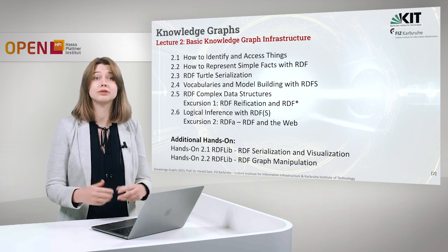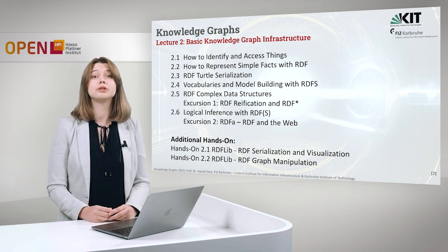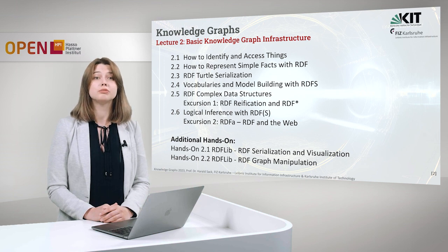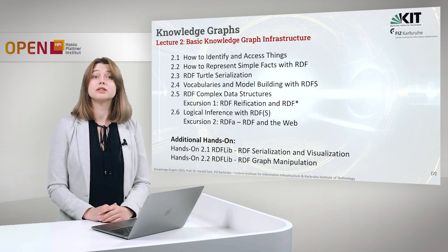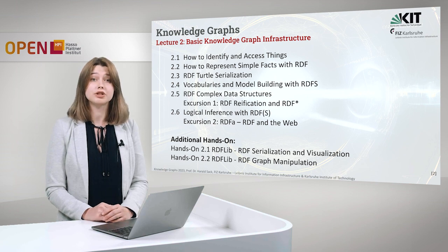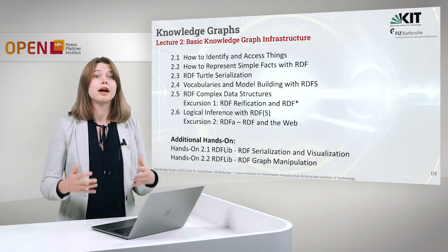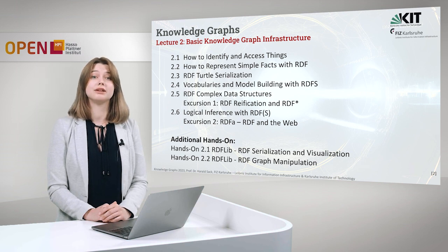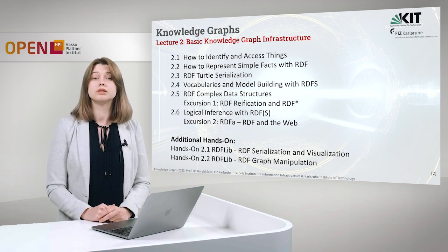Then we will move to the Turtle serialization, a way to encode RDF graphs. In 2.4 we will talk about vocabularies, semantics and meaning — we will talk about RDF Schema, which is used to describe facts and things. In 2.5 we will move to complex data structures: lists, containers, collections and how to work with them. In excursion 1 we will talk about RDF reification and RDF-star — sometimes RDF triples are not enough and we need to make statements about statements. In 2.6 we will talk about logical inference with RDFS and how to deduce new knowledge from what is explicitly mentioned.